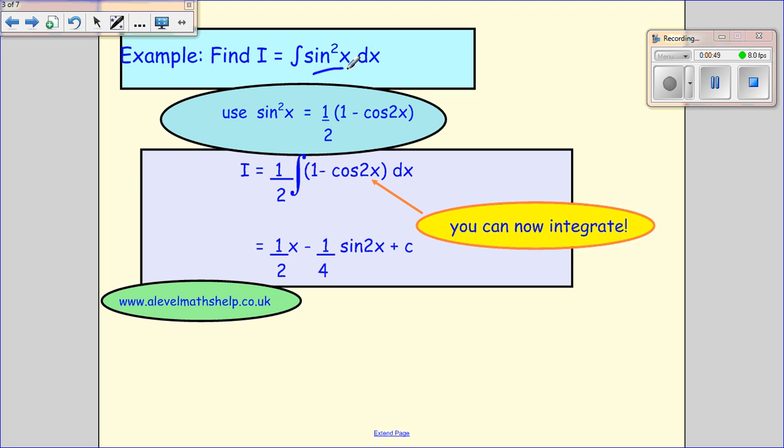So if I have sin squared x, I just substitute from the formula we were just talking about: half times 1 minus cos 2x. Put this in and now this is something I can integrate.